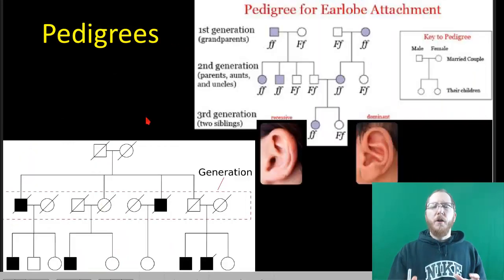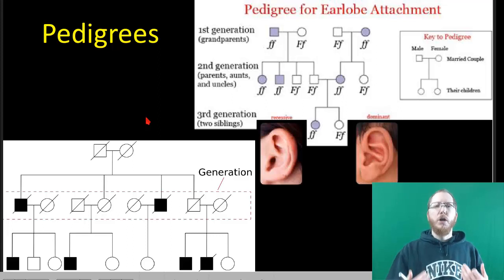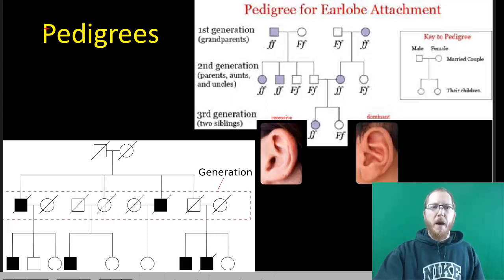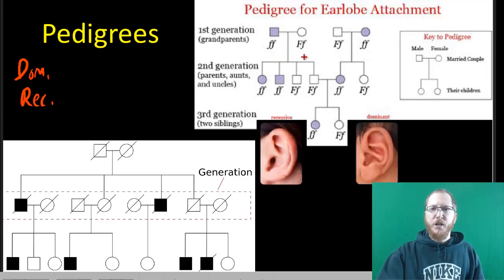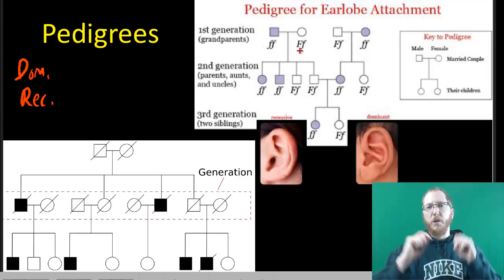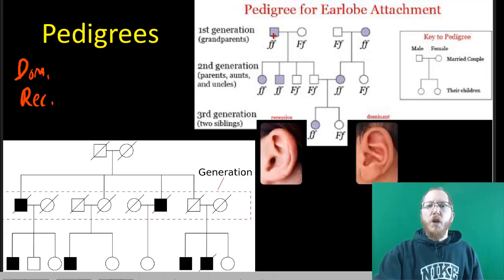One way to track all these things is to make a pedigree, which allows us to look and figure out what's going on. The first thing we can do with a pedigree is figure out if something is dominant or recessive. We color in affected individuals — in this case, attached earlobes means you're affected, so the recessive trait is what we're tracking. Every affected individual must be homozygous recessive (ff), because that's the only way to have attached earlobes.